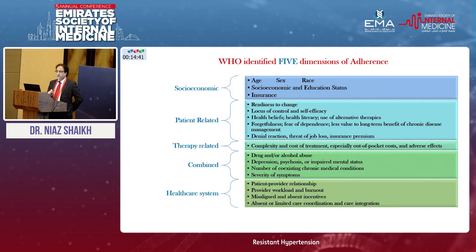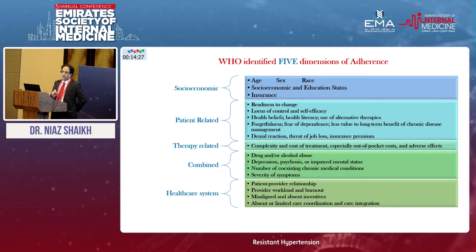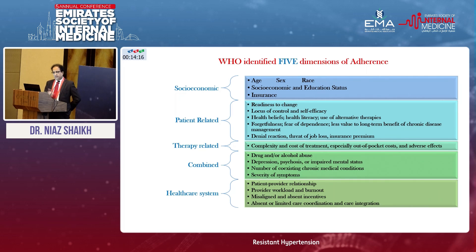The WHO identifies five different domains when talking about adherence. The majority is socioeconomic — especially for the large world population where socioeconomic factors are a huge contributor to poor adherence. Younger people and the very elderly tend to have more problems with adherence. Female patients sometimes also have lower compliance compared to male patients. Insurance and education status also play a role.